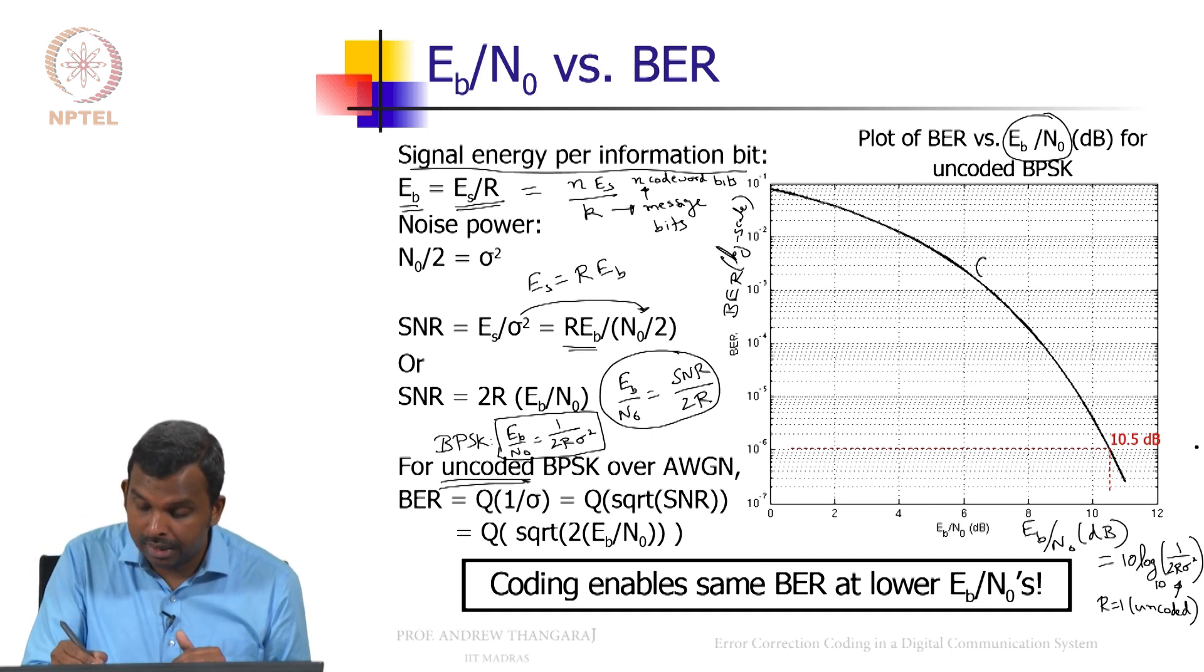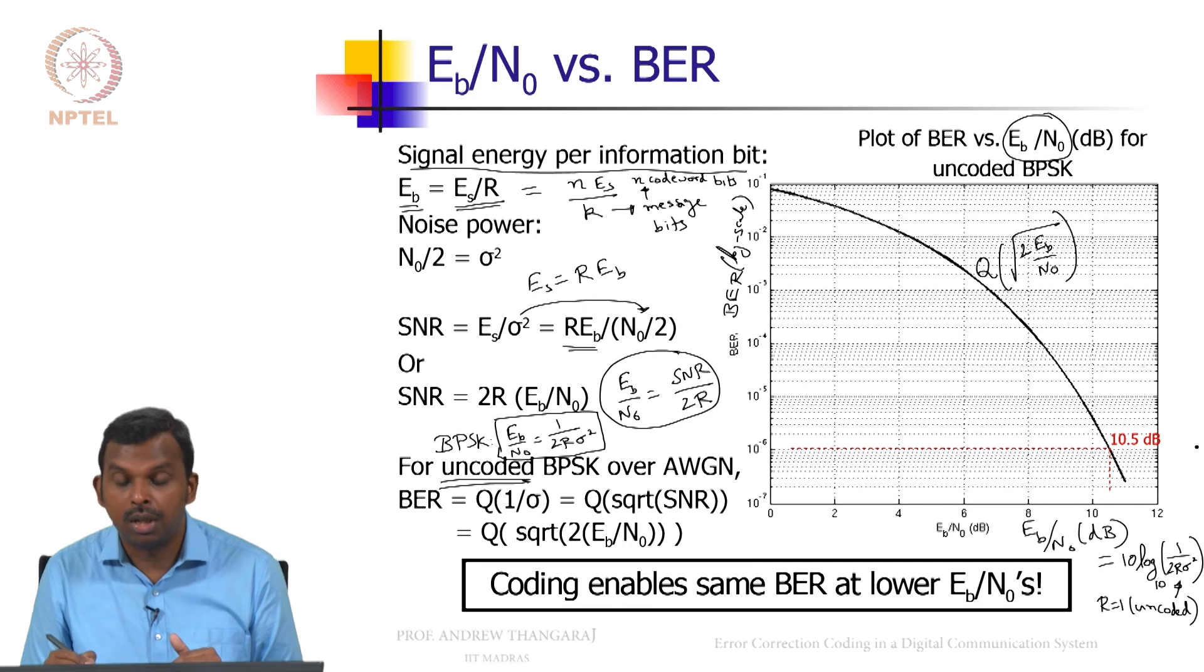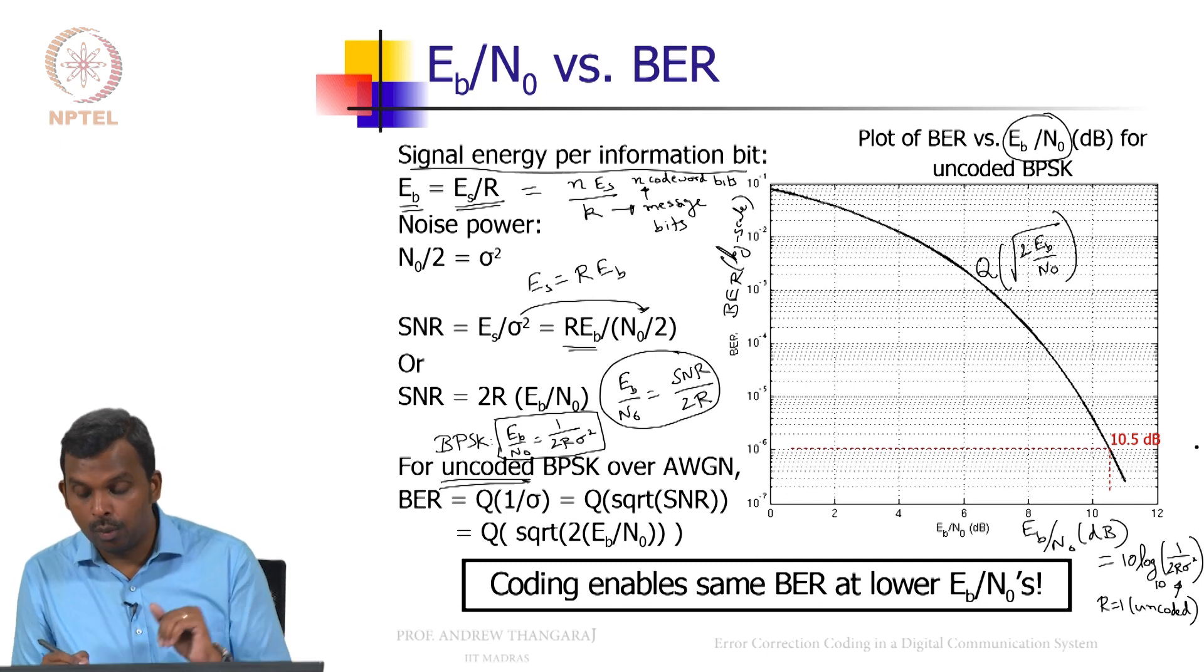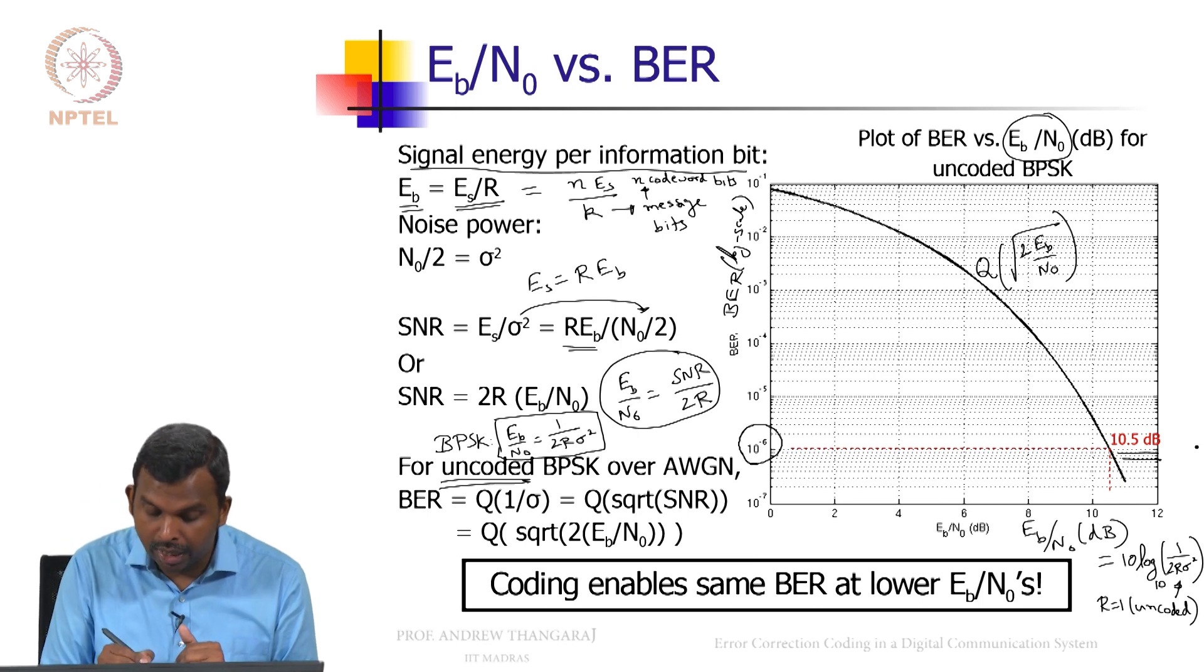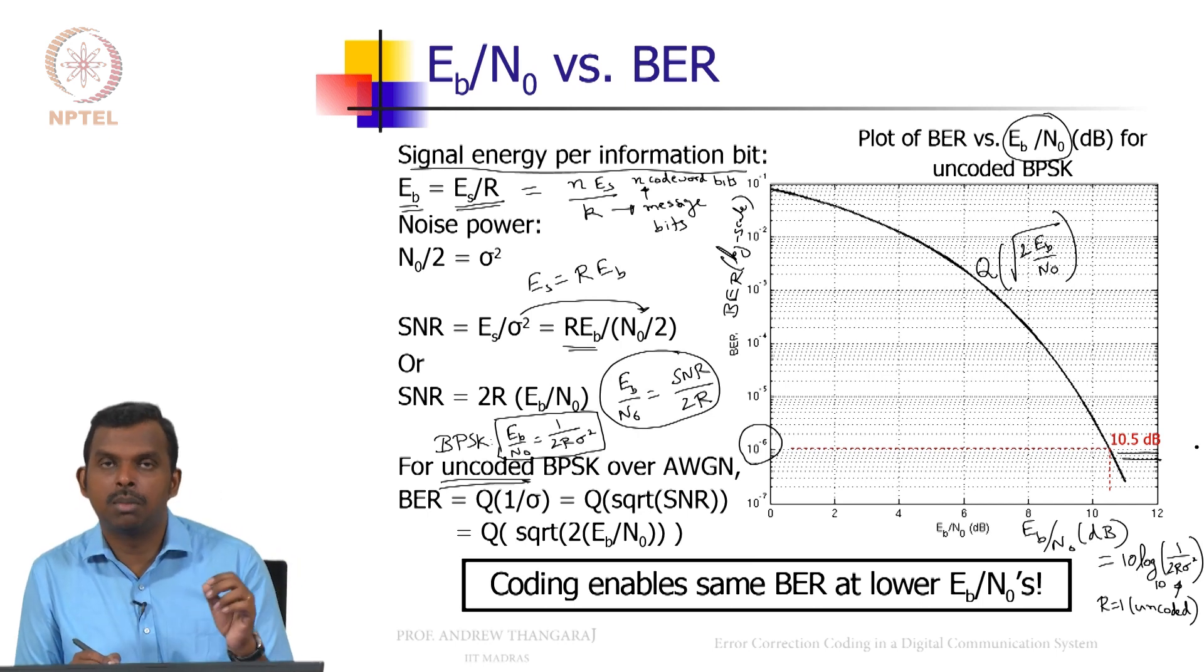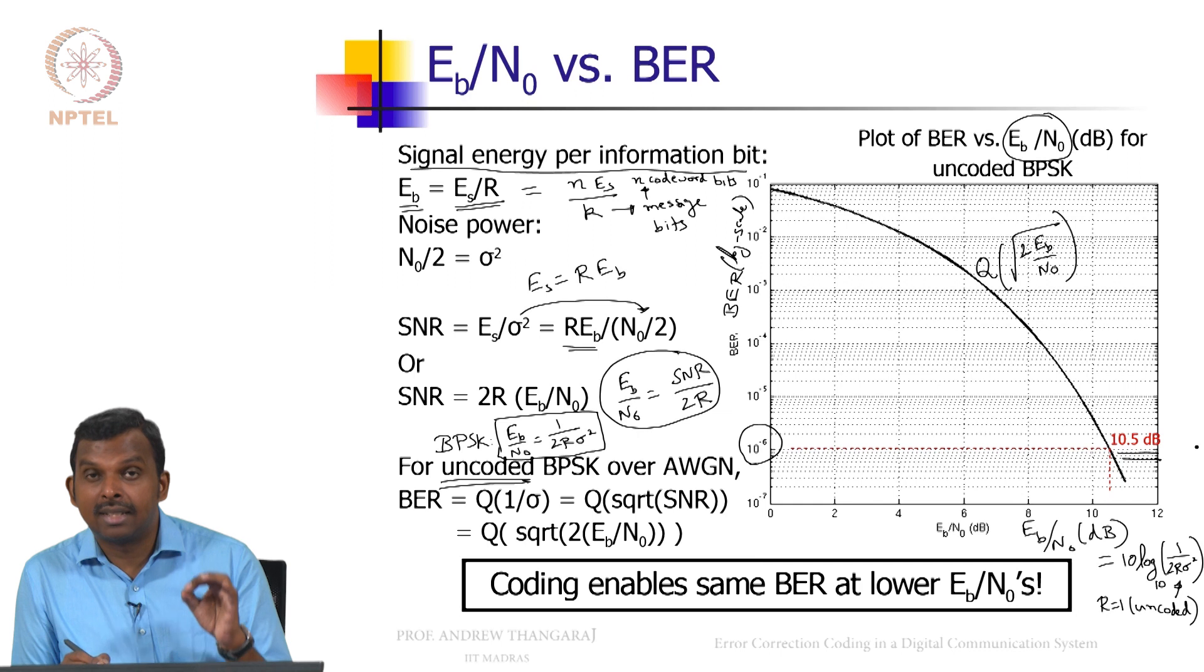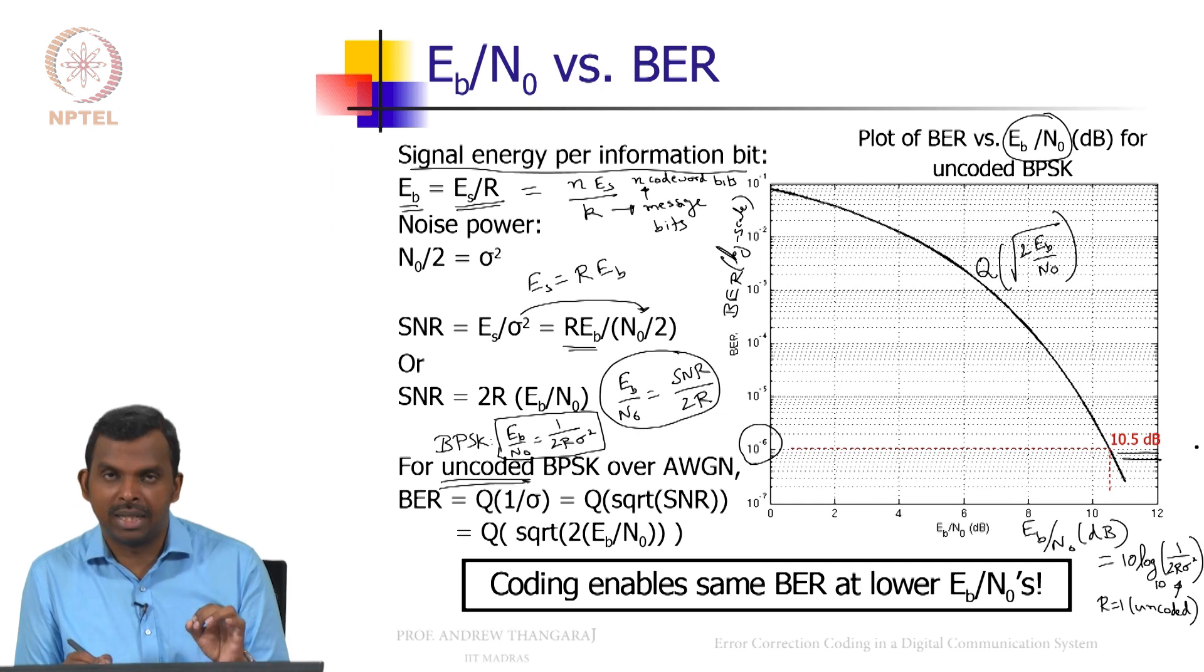Remember, uncoded BPSK, this plot is simply Q of square root of 2 Eb over N0. So it is an easy enough formula and you plot this and one particular data point is 10.5 dB which corresponds to a bit error rate of 10 power minus 6. So just remember this, keep this in mind. It is a good metric to remember.